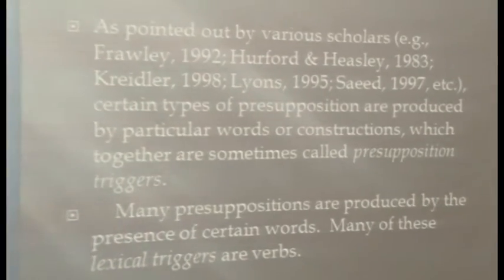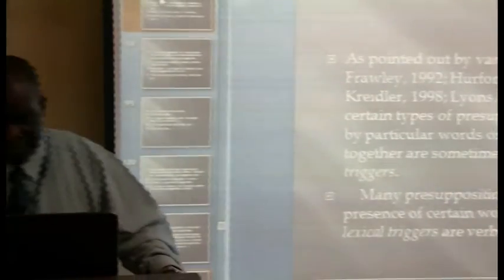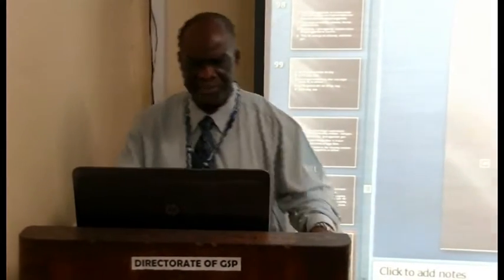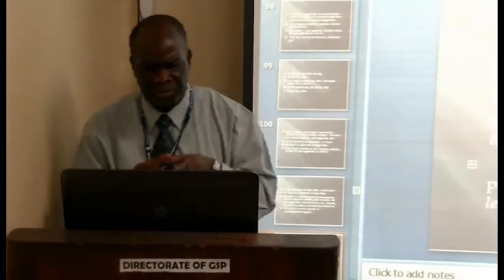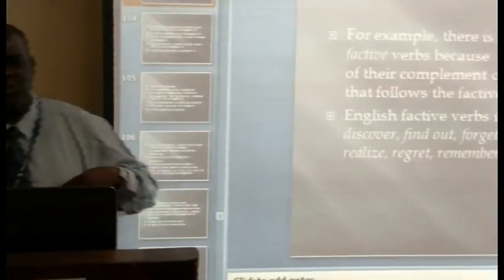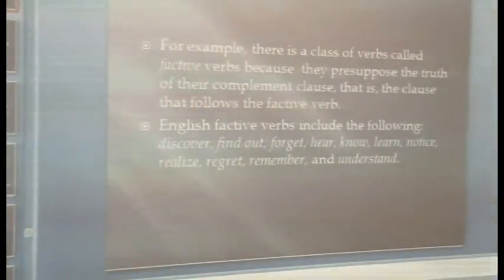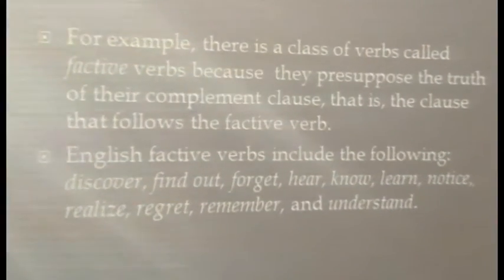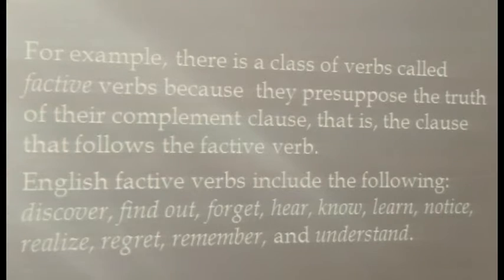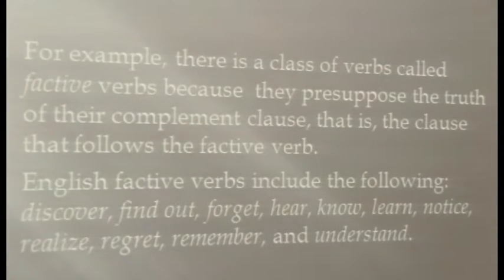Several scholars have pointed out that certain types of presupposition are produced or triggered by particular words or constructions, which together are called presupposition triggers. Many presuppositions are produced by the presence of certain words. Many of these lexical triggers are verbs. There is a category of verbs called factive verbs, because factive verbs presuppose the truth of the accompanying clause. Factive verbs in English include: discover, find out, forget, hear, know, learn, notice, realize, regret, remember, and understand.